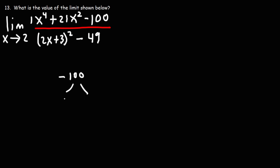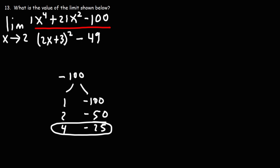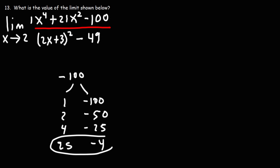So let's make a list. If we divide negative 100 by 1, we get negative 100. If we divide it by 2, we get negative 50. 3 doesn't go into 100. Next up is 4 — if we divide it by 4, we get 25. Notice that this adds up to negative 21. So if we divide by 25, we'll get negative 4. These two multiply to negative 100 but add to 21.